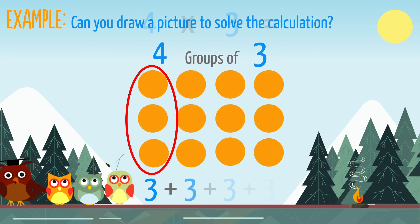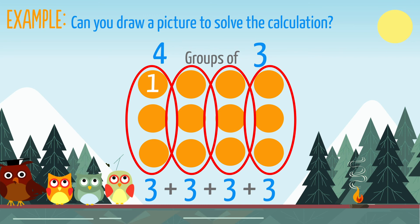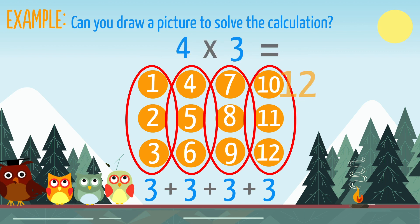3 plus 3 plus 3 plus 3. Let's count the dots to find our answer: 1, 2, 3, 4, 5, 6, 7, 8, 9, 10, 11, 12. 4 multiplied by 3 equals 12.